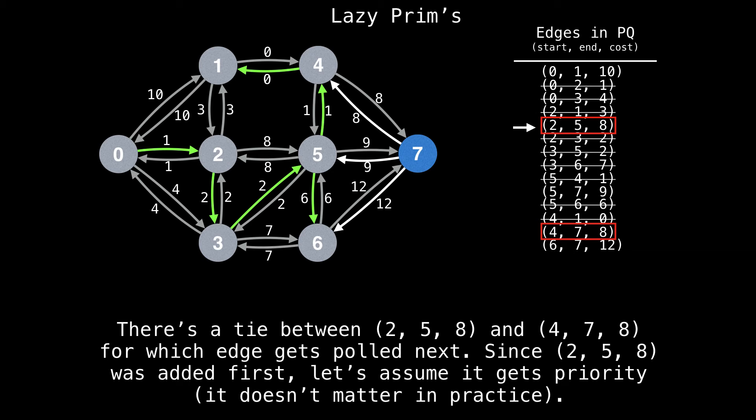So what happens when we have two edges with the same cost in the priority queue? Which one gets pulled first? In practice, this doesn't matter, so we can assume that edge to five, eight gets pulled first because it was added first.